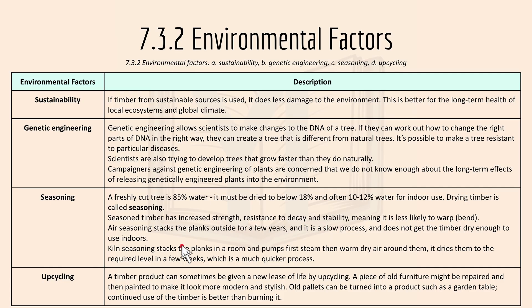With air seasoning stacks, the planks are set out for a few years — it is a slow process. With kiln seasoning, the planks are placed in a room and first steam, then warm dry air is pumped around them, drying the timber much more quickly in a few weeks.